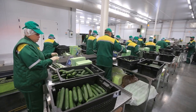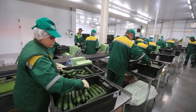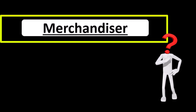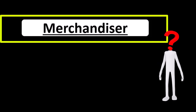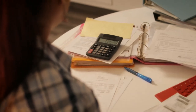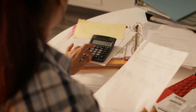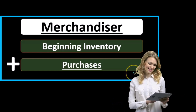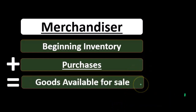This is a very important formula — we want to memorize it, as we'll be using it many different ways. For a merchandiser — a company that just purchases and sells inventory and doesn't make it — the cost of goods sold calculation starts with beginning inventory (what was on hand at the start of the period), and then we add purchases. We know what the purchases are because we actually paid for the inventory we bought, so there's no real estimation involved. That gives us the cost of goods available for sale.